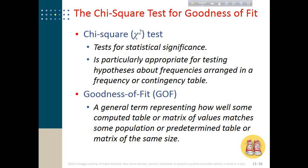Hello everyone. This is the last learning objective of chapter 21, learning about the chi-square test. In the last video we learned about the t-test, and we will be learning more about t-test in chapter 22. One important point to understand is that t-test can be used when we have a ratio or interval scale variable. Both chi-square test and t-test are tests of difference.